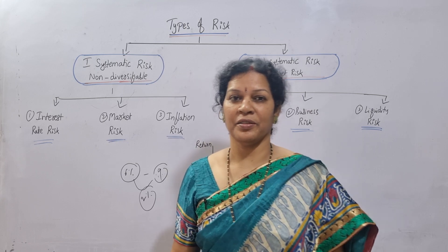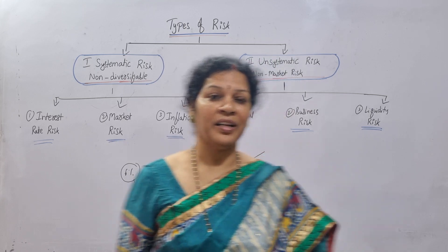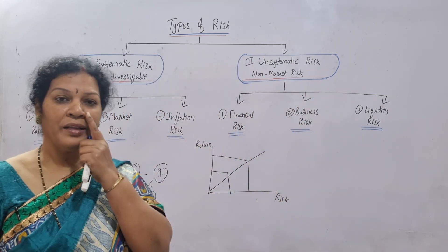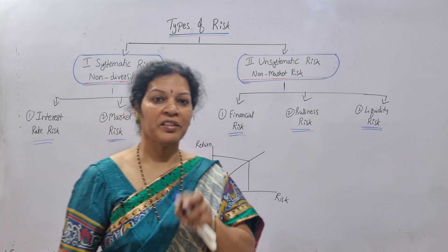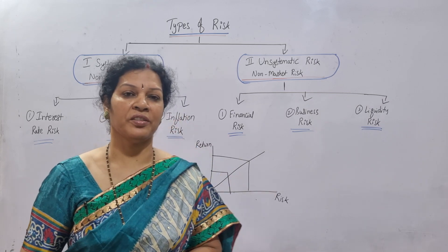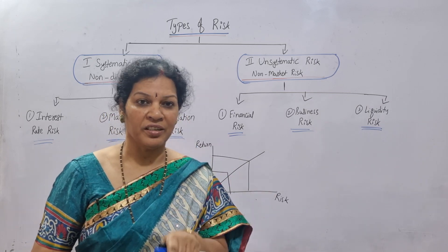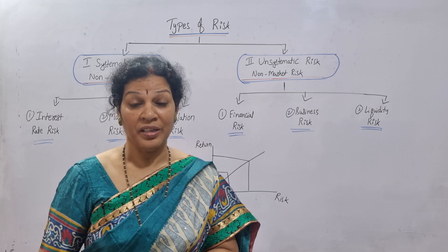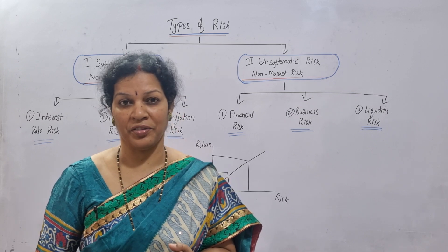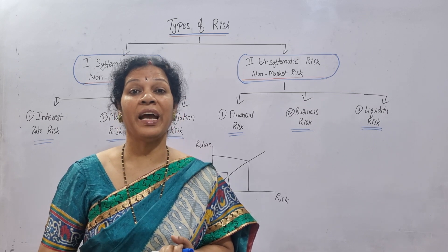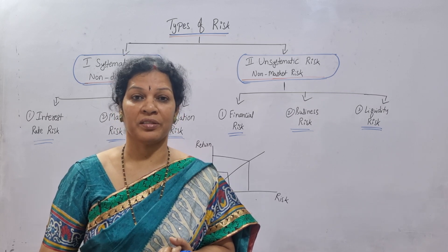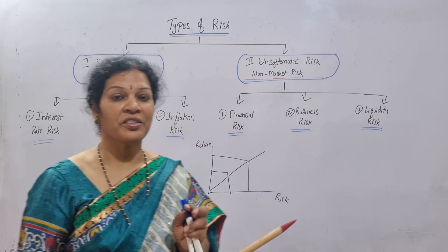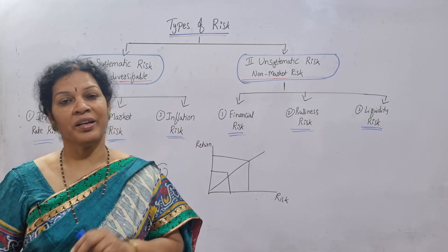There is another risk: unsystematic risk. Opposite to systematic, unsystematic risk is not related to outsiders — it is related to the inside of the organization. It is in the hands of the organization; the organization can control this risk.